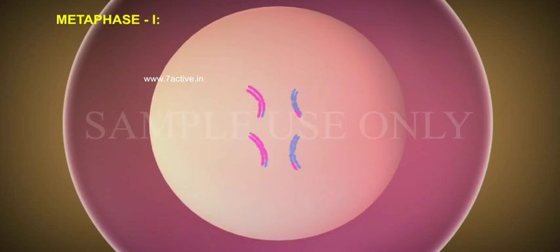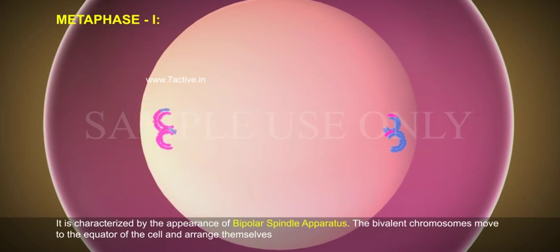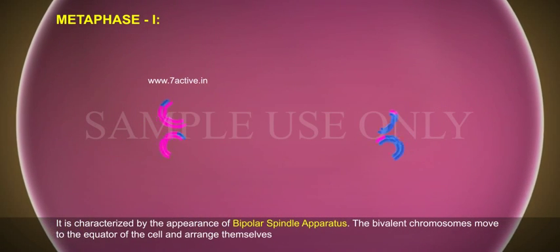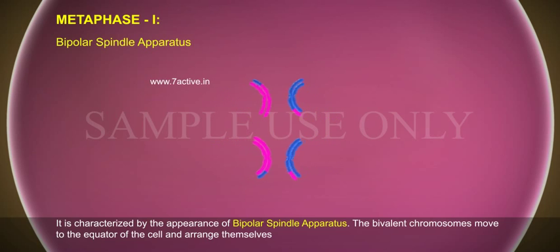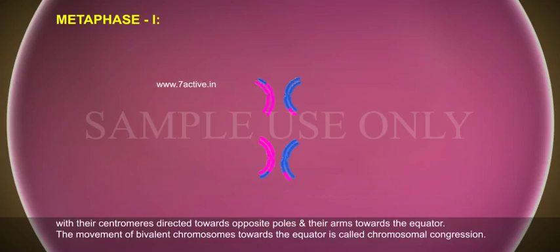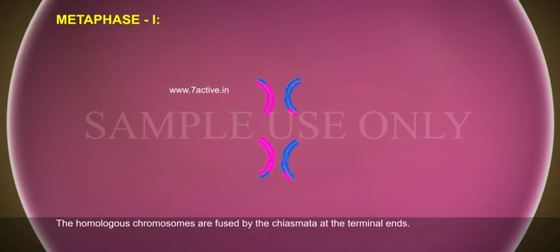Metaphase 1. It is characterized by the appearance of bipolar spindle apparatus. The bivalent chromosomes move to the equator of the cell and arrange themselves with their centromeres directed towards opposite poles and their arms towards the equator. The movement of bivalent chromosomes towards the equator is called chromosomal congestion. The homologous chromosomes are fused by the chiasmata at the terminal ends.